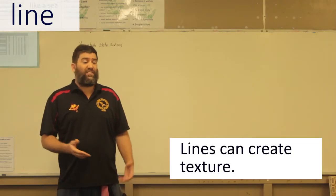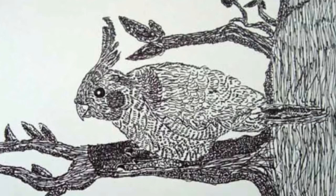Here's some lines creating texture. Here there's different types of lines creating the texture for the bark and the texture for the bird's feathers.